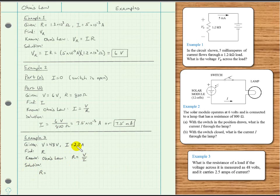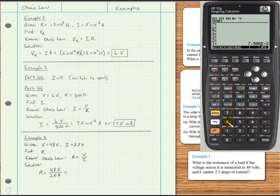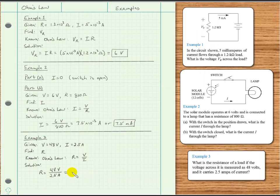R is equal to the voltage was 48 volts divided by the current was 2.5 amps. And a volt per amp is an ohm. And we get 19.2 ohms, which is what we were asked to find.